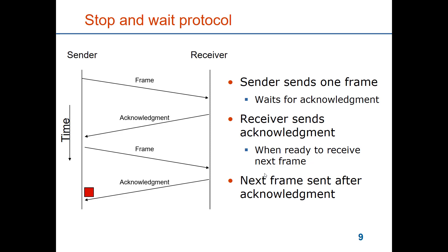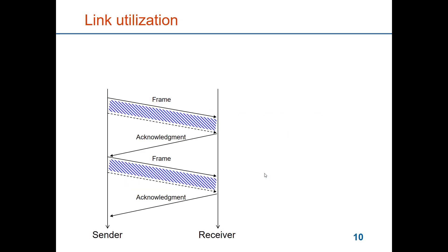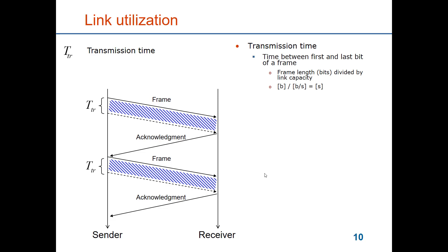If we look at this protocol, we see that the link may not be used very well. We have the transmission time, which is the useful time of the link — the time from the first bit of the frame until the last bit of the frame goes out on the link. We can compute that time by taking the frame length in bits divided by the capacity of the link in bits per second, and you get the length of one frame measured in time.